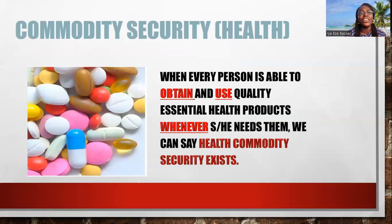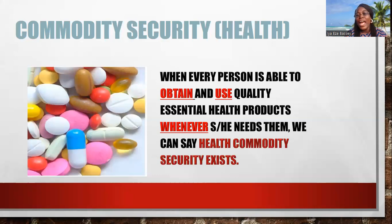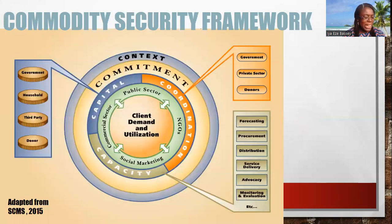When you talk about commodity security as it relates to health products, health commodity security exists when every person is able to obtain and use quality essential products whenever he or she needs them. But for medical laboratory scientists, we do not simply obtain and use, because these kits are provided for us and we produce results which the end users use. Please note that.